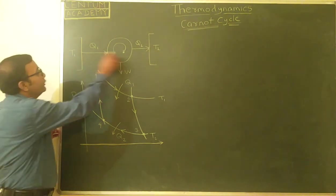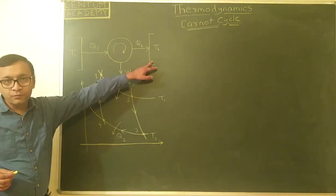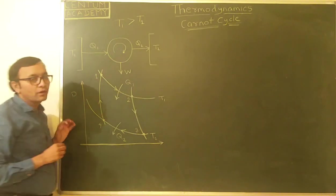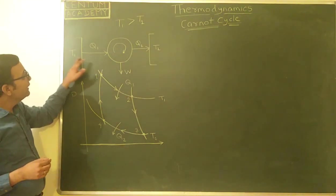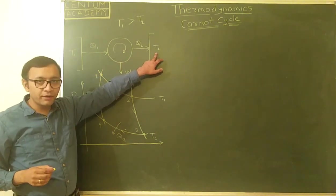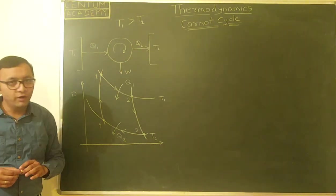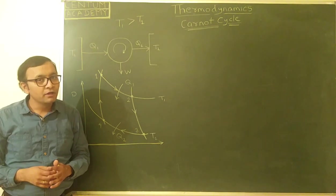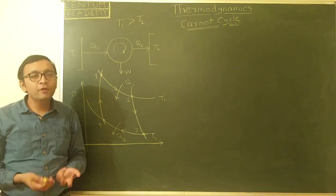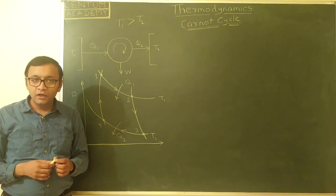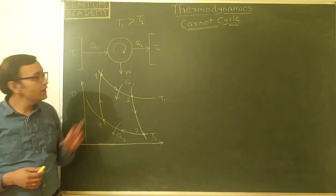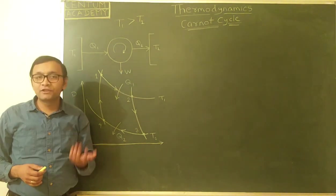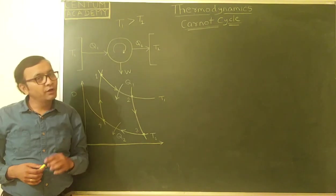A heat engine operates between two temperatures T1 and T2, where T1 is greater than T2. It takes heat Q1 at the higher temperature and releases heat Q2 to the colder temperature, doing some work in the process. This hotter temperature is the temperature at the combustion chamber, achieved by burning fuel — for example, burning petrol causes the higher temperature T1. Heat Q2 is released as exhaust to the surroundings, so T2 is the surrounding temperature.